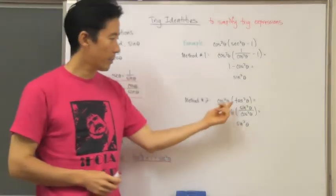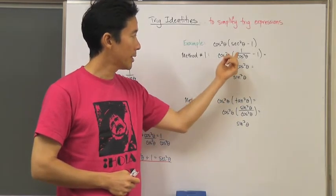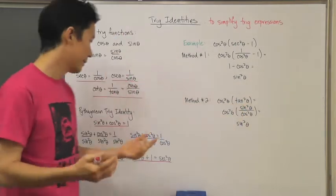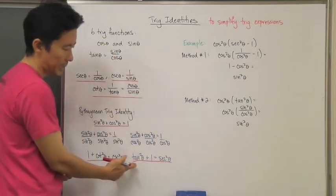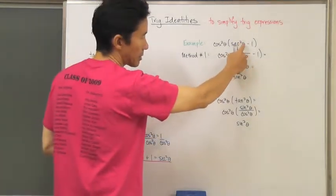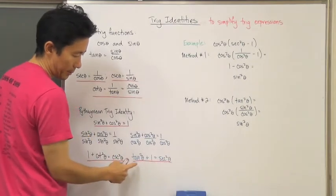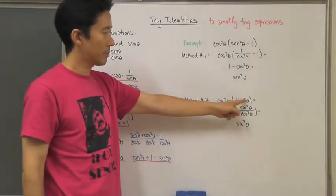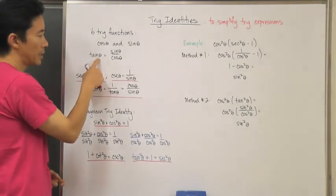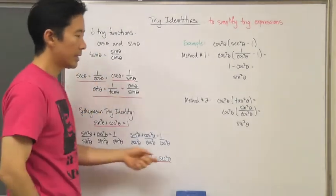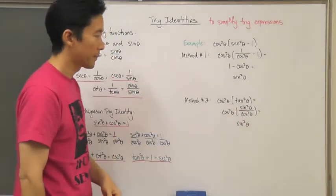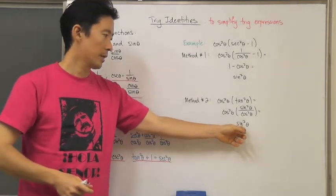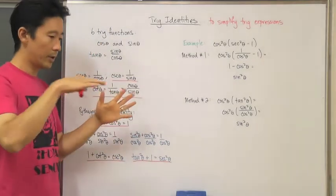In method two, we recognize that secant squared theta minus one equals tangent squared theta, from the Pythagorean identity tan²θ + 1 = sec²θ. So we substitute tangent squared theta for that part of the expression. Then using the definition of tangent — sine over cosine — squaring both sides gives sine squared theta over cosine squared theta. Multiplying cosine squared theta by sine squared theta over cosine squared theta, the cosine squared terms cancel, leaving sine squared theta again.